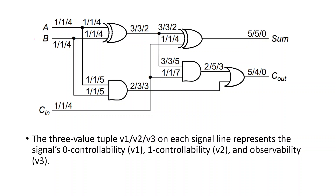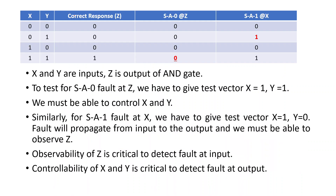For each signal line we have to determine three values. You can see this notation: one oblique one oblique four. This is a three-value tuple V1, V2, V3 — where V1 represents the zero controllability, V2 represents the one controllability, and V3 represents the observability.